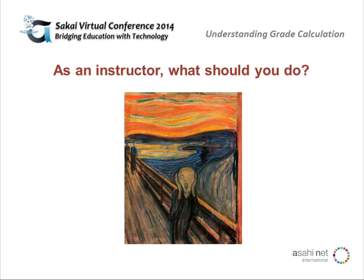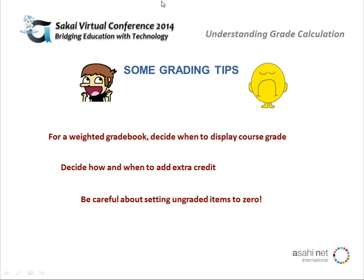As an instructor, there are some things you can do to mitigate the different things that can happen in your gradebook. One is to decide when you want to display the course grade — especially for weighted gradebooks, you might want to wait until you have a scored item in every category so the weighting scheme is the way you want it and not doing behind-the-scenes adjustments. Decide how and when to add extra credit since there are fluctuations there as well. And be very careful about setting ungraded items to zero — no score means not acknowledged by the gradebook, while a zero is just a really bad score.